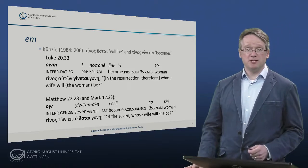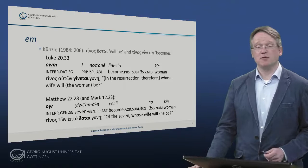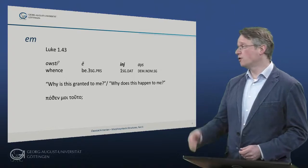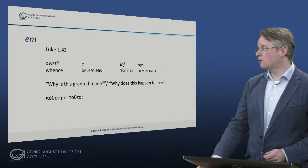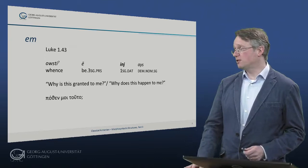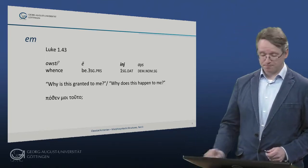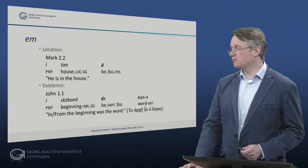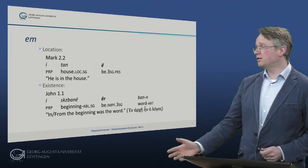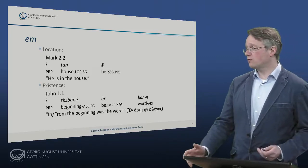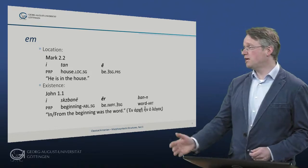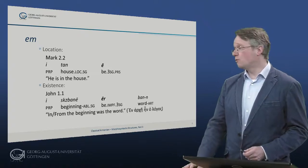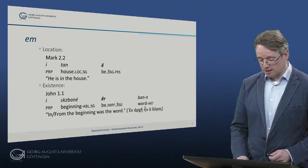For this we can compare dative marking the experiencer with the copular verb in other passages — for example, 'ustie ins ice,' meaning why is this granted to me, translating the Greek 'poten moi tuto.' For location with this copular verb, there are many examples, like Mark 2:2 'itane' — he is in the house — or existence, as in 'iskisbane erbanen' at the beginning of John's Gospel, meaning in or from the beginning was the word, with an interesting ablative in the Armenian version.